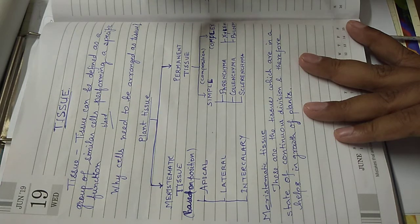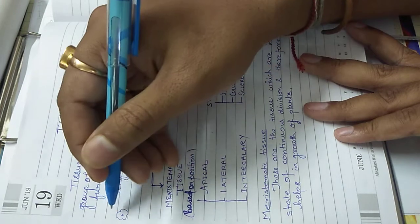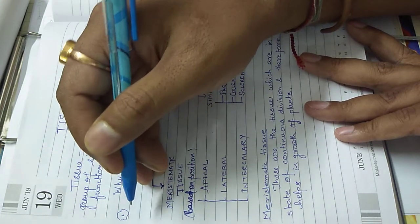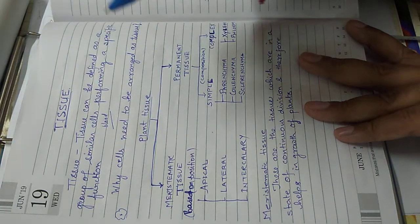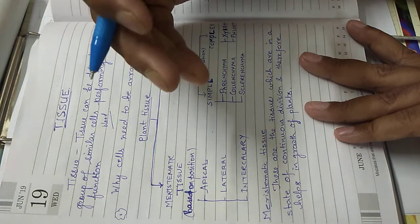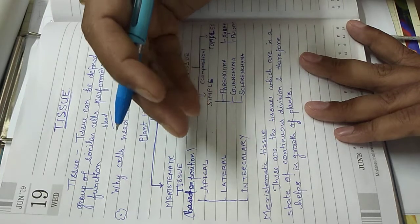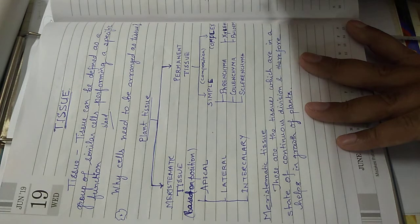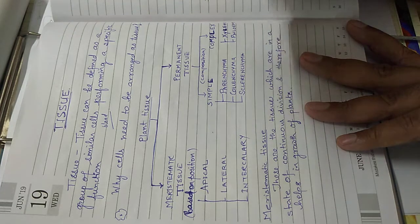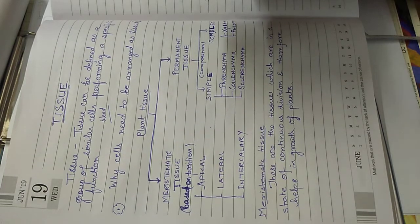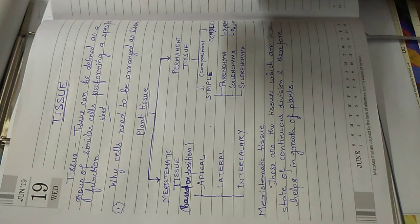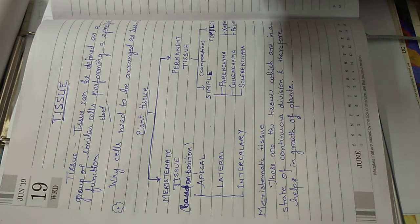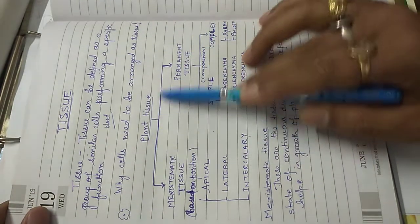Why do cells need to be arranged in a tissue? In unicellular organisms like amoeba, all functions — obtaining nutrients, excretion, and respiration — are done by a single cell. In multicellular organisms like humans, made up of billions of cells, if all cells had to do all functions they would be overloaded. So cells are organized as tissue for proper division of labor — nervous tissue carries electrical signals, blood carries nutrients, and muscular tissue causes contraction and movement.